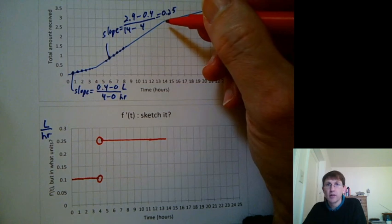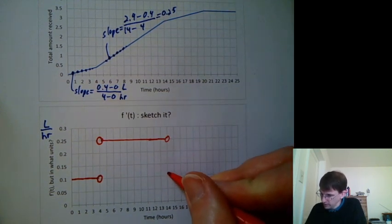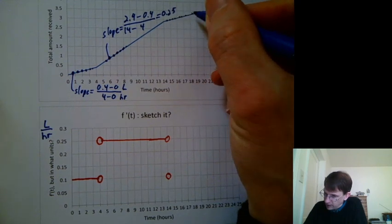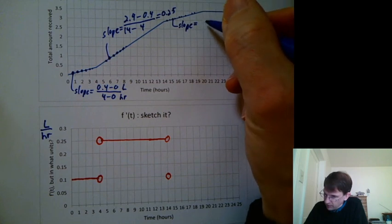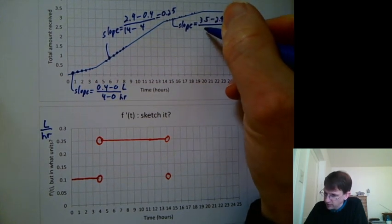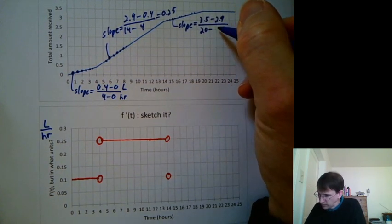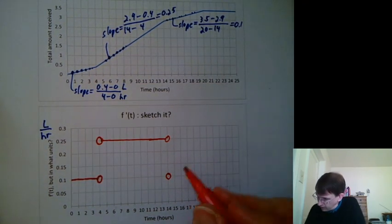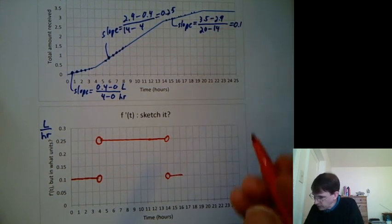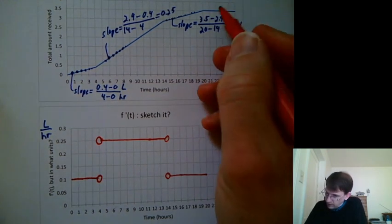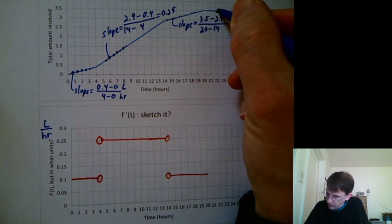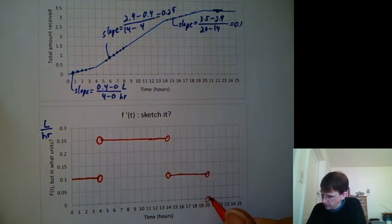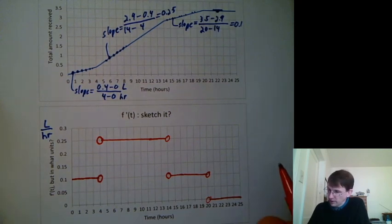The same thing happens at time 14 where you have another sharp bend — the derivative is going to not exist there, and then the derivative is going to be some constant. I engineered the data to have the same slope as before: 3.5 minus 2.9 divided by hour 20 minus hour 14 ends up being 0.1 again. So it's 0.1 for a while. Then at time 20, the graph is a flat line — we're not giving that patient any more IV fluid — so the value of the derivative drops to 0. That's our sketch of f prime.